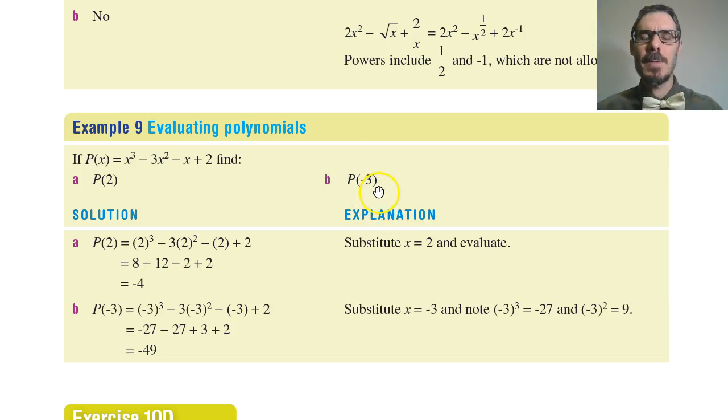P(-3). Now this will highlight something you really need to be careful of. Carefully substitute minus 3 in. You'll see why we always use brackets when we do this substitution. Because if it's a negative number, an even number power of a negative number is a positive number.